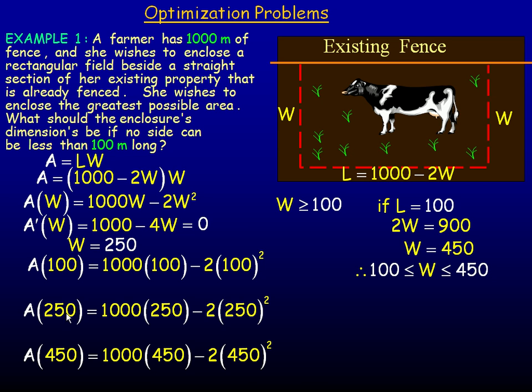So of course, the 250 is the extrema point. The 100 and the 450 are the endpoints of the interval upon which we're searching. So we evaluate those. Now we can see that the 125,000 square meters is certainly the largest of the three. So the extrema point here is certainly the maximum value for the area.